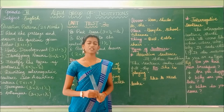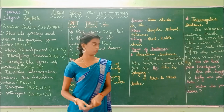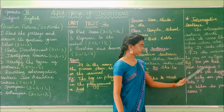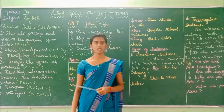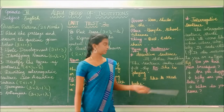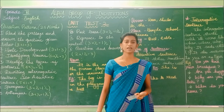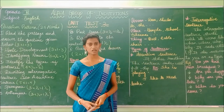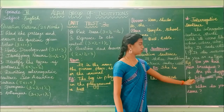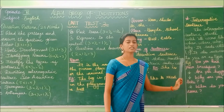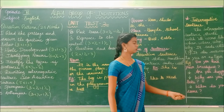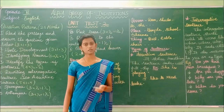The yes-or-no type means the sentence doesn't start with a WH word but can be answered with yes or no. For example: 'Do you have your breakfast?' — this doesn't start with a WH word, but the answer is either yes or no. Similarly, 'Are you happy?' — the answer is also either yes or no.